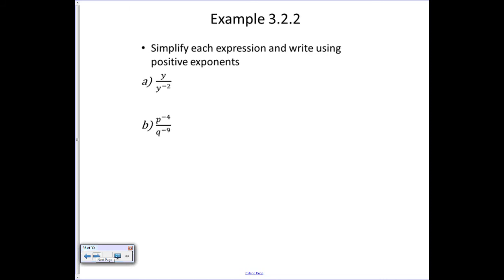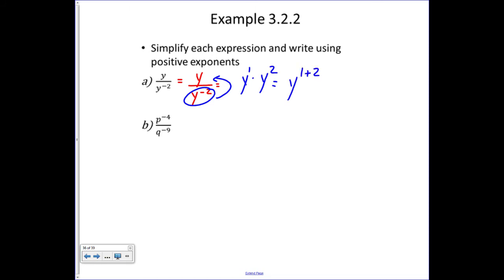Now we want to simplify expressions using only positive exponents, mixing rules from the last section and this one. We have y over y to the minus two. The negative exponent is in the denominator, so we move it to the numerator and it becomes positive: y times y squared. When multiplying, we add exponents — one plus two — giving us y cubed.